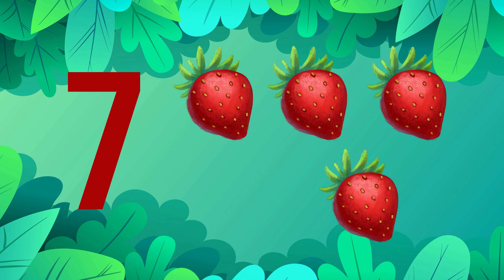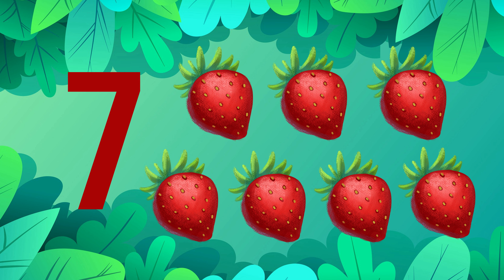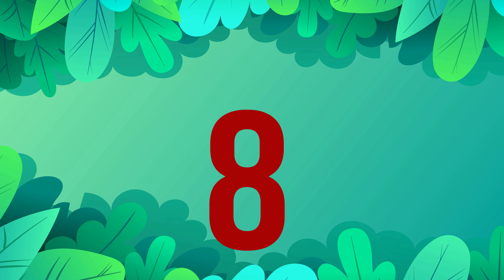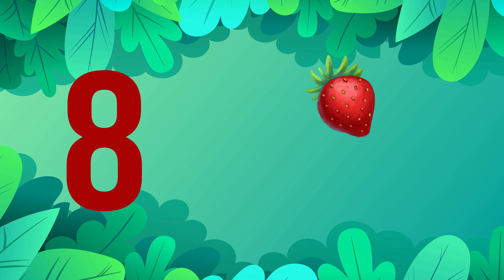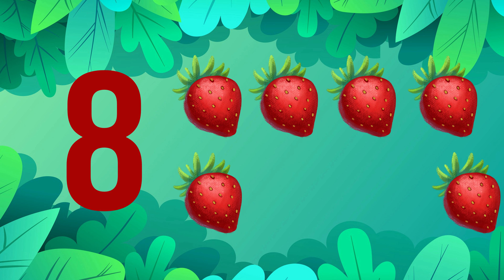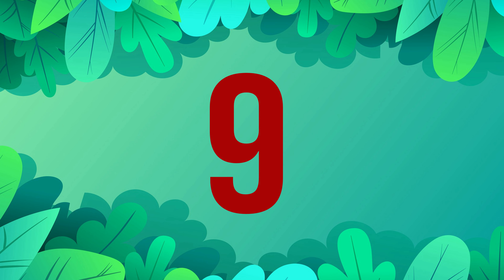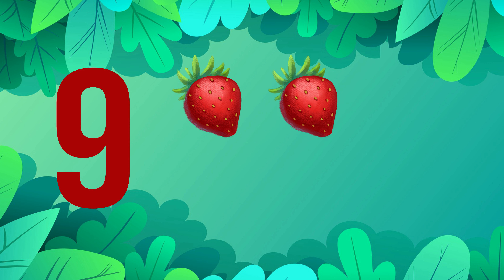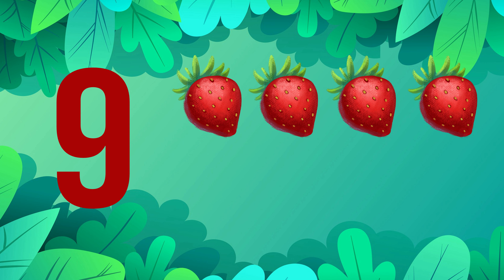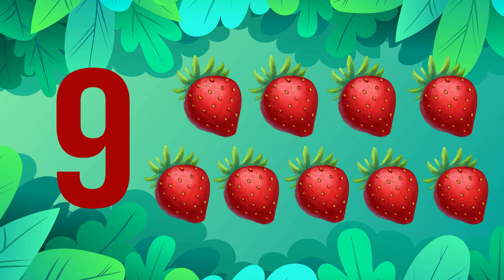7 - 1, 2, 3, 4, 5, 6, 7 - 7 strawberries. 8 - 1, 2, 3, 4, 5, 6, 7, 8 - 8 strawberries. 9 - 1, 2, 3, 4, 5, 6, 7, 8, 9 - 9 strawberries.